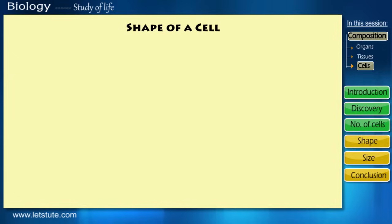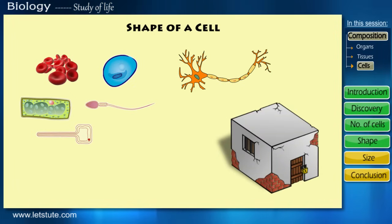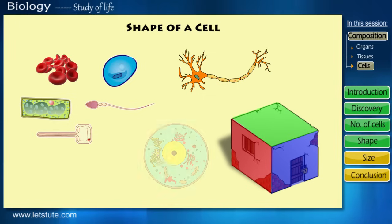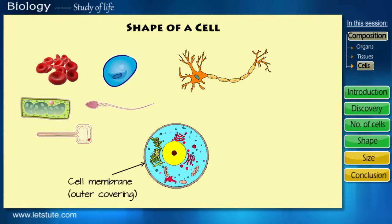Second one is shape of a cell. Cells are of various shapes. Majority of them are round, spherical, and elongated. But do you know what exactly gives a cell its shape? Just like a room gets its shape from the walls, a cell gets its shape from a cell membrane, which is the outer covering of the cell.